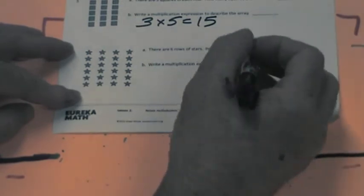There are six rows of stars. How many stars are in each row? Well, here's the six rows. Let's count the stars. One, two, three, four.